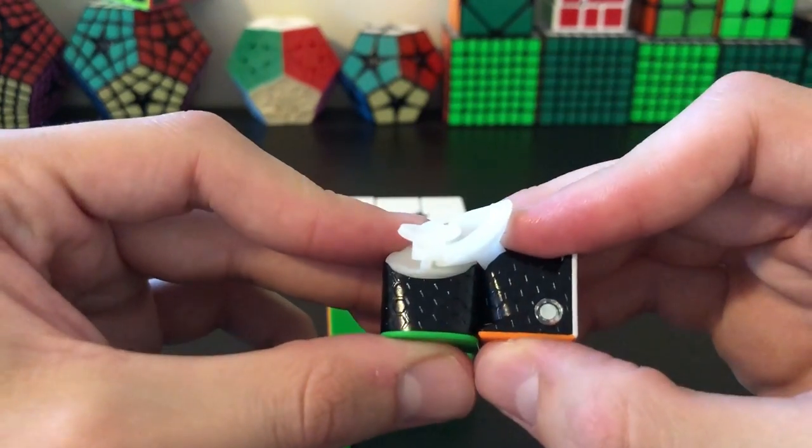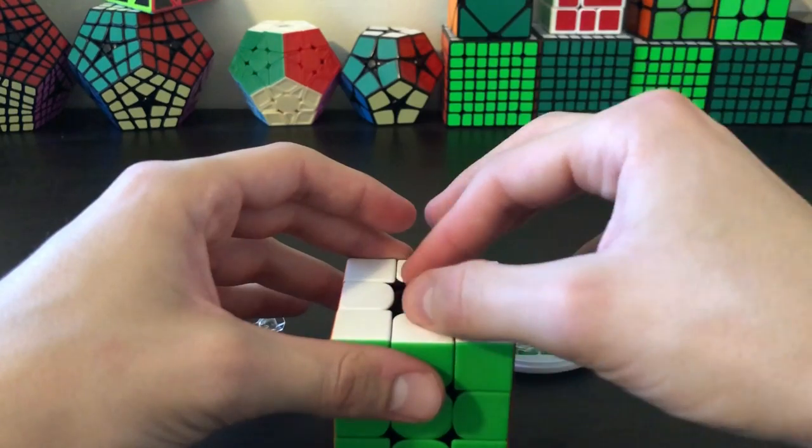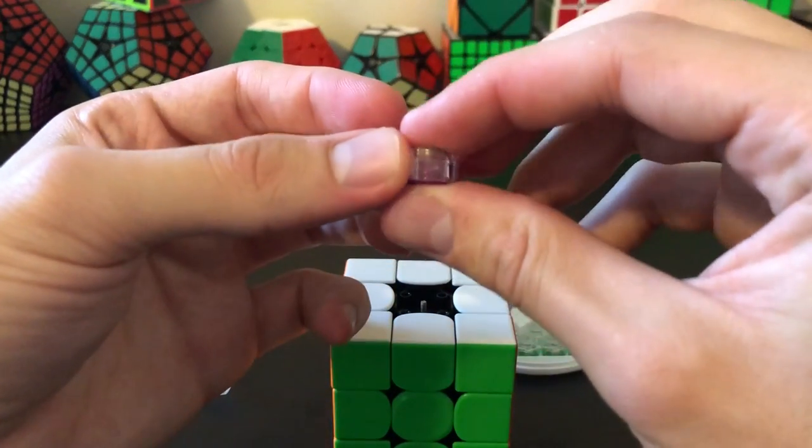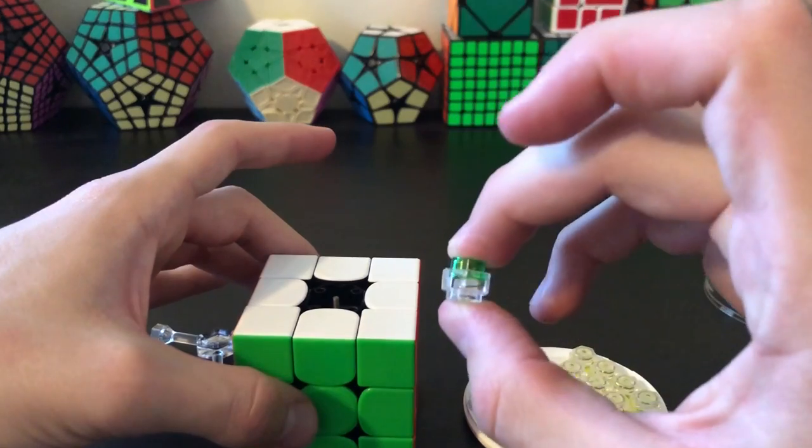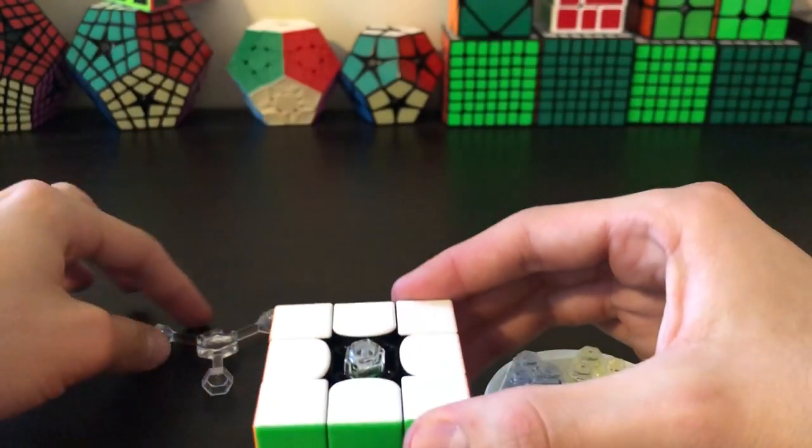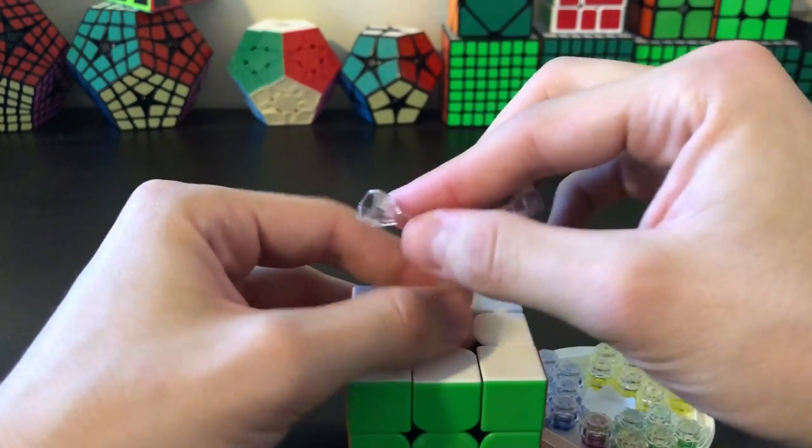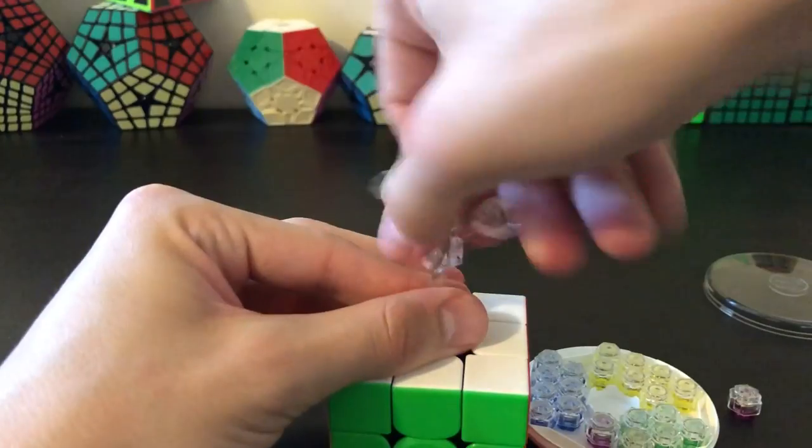What these colored nuts and springs are actually doing is changing the springiness of the spring in the cube, thus making it a little bit snappier or a little bit looser. And they also act as the bolts, so you can tension the cube, make it tighter or make it looser. This whole process takes maybe about a minute or two to take all the nuts out and then switch them back out with other nuts.